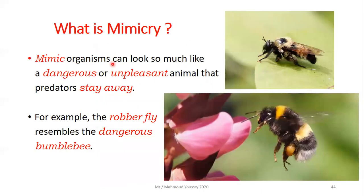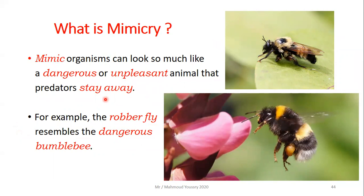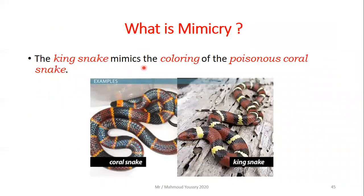Mimic organisms can look so much like a dangerous or unpleasant animal that predators stay away. For example, the rubber fly resembles the dangerous bumblebee - it is very hard to tell them apart. Also, the king snake mimics the coloring of the poisonous coral snake.